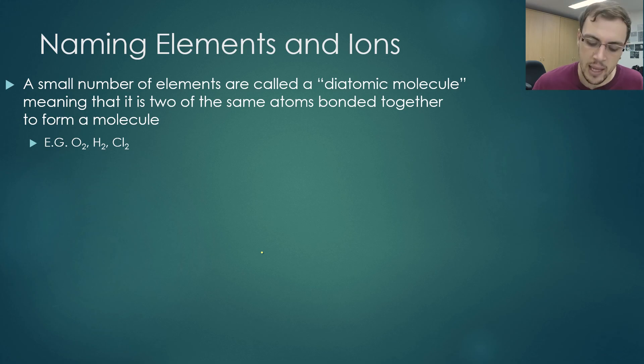Let us start now on how to name elements and ions. Something that you should be aware of is that there are a small number of elements called diatomic molecules. What this means is that you have two of the same atoms that can bind together.